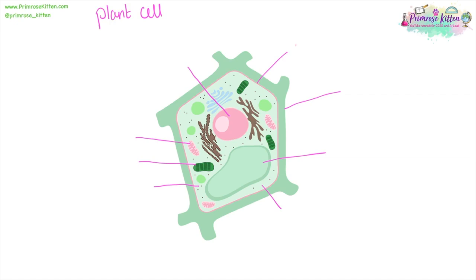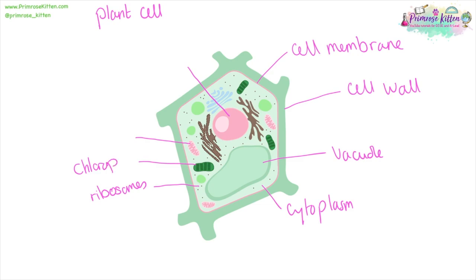Here we have our plant cell with a cell membrane, that's responsible for determining which bits go in and out of the cell. The cell wall, important for structure. The vacuole, important for structure. The cytoplasm, where most of the reactions take place. The tiny little dots are the ribosomes, which are responsible for protein synthesis. The green bits are the chloroplasts. The pink ones are the mitochondria, where energy is produced. And then last but not least, we have our nucleus.